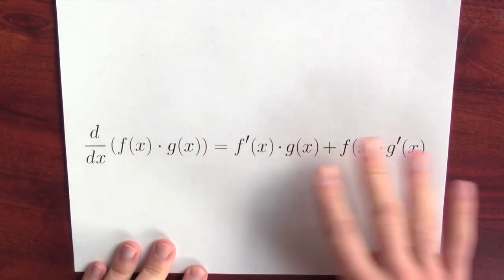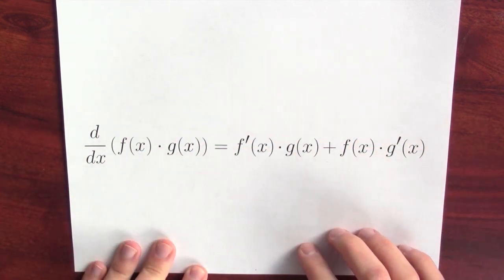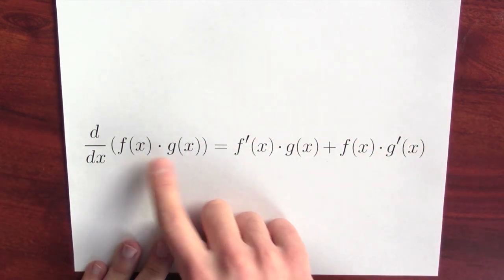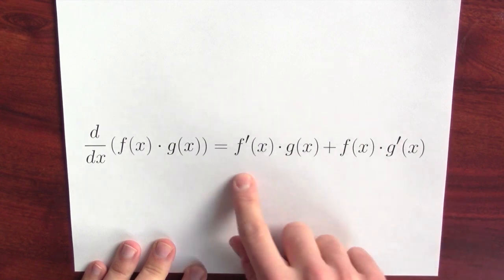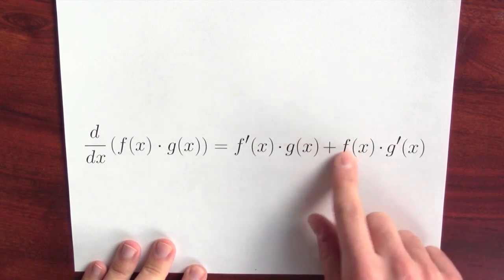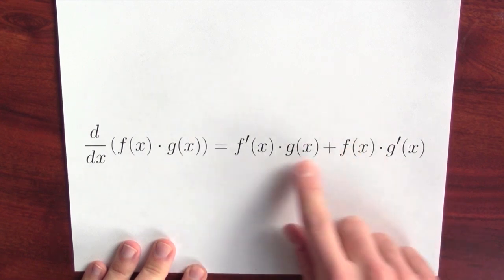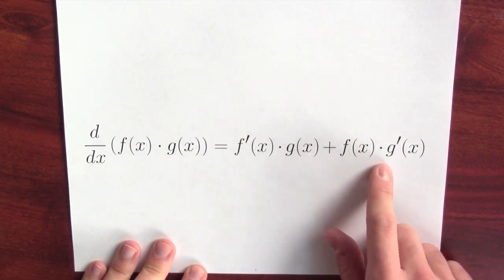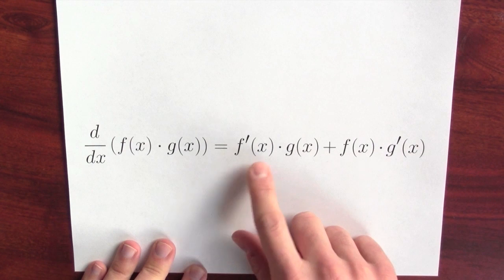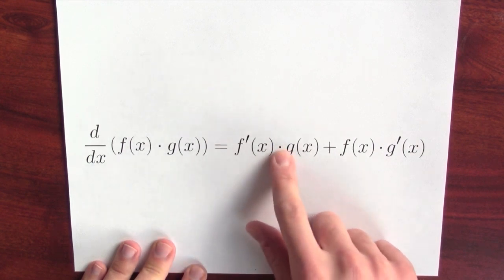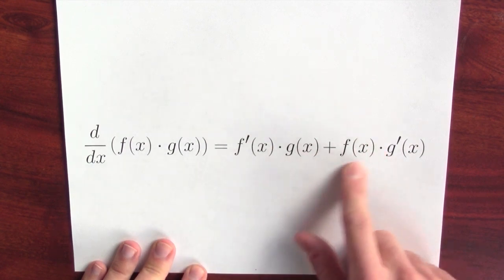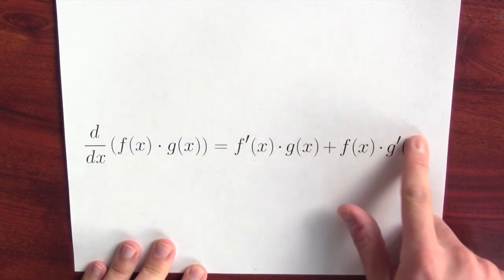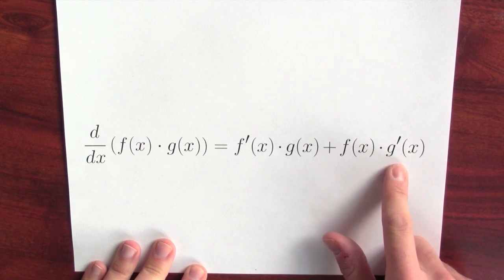There are a bunch of things to be warned about here. This is the product of two functions, but the derivative involves the sum of two different products. It's the derivative of the first times the second, plus the first times the derivative of the second.